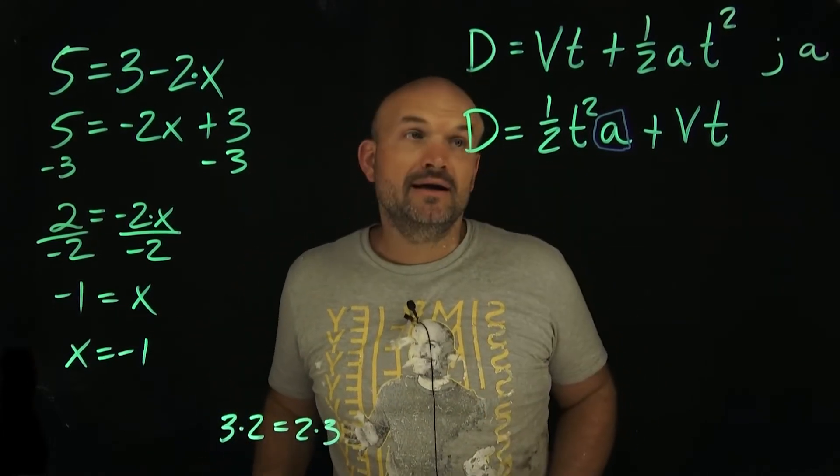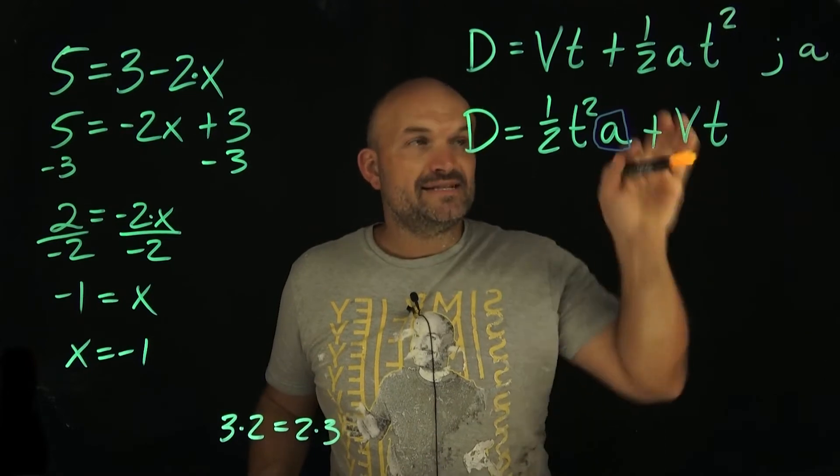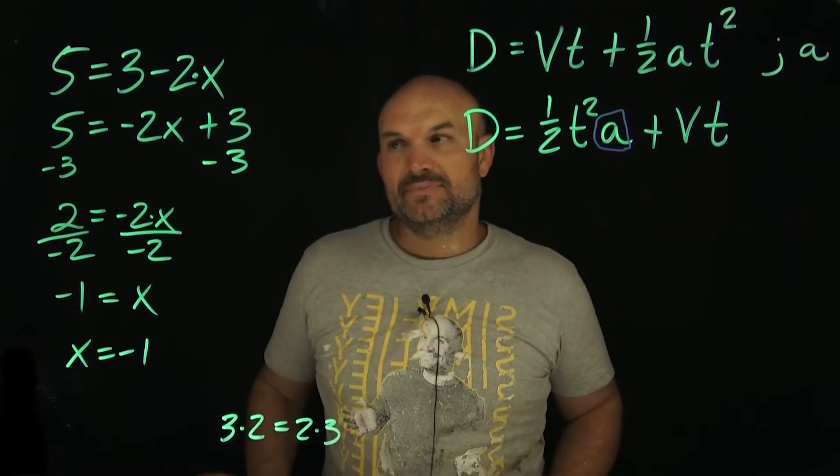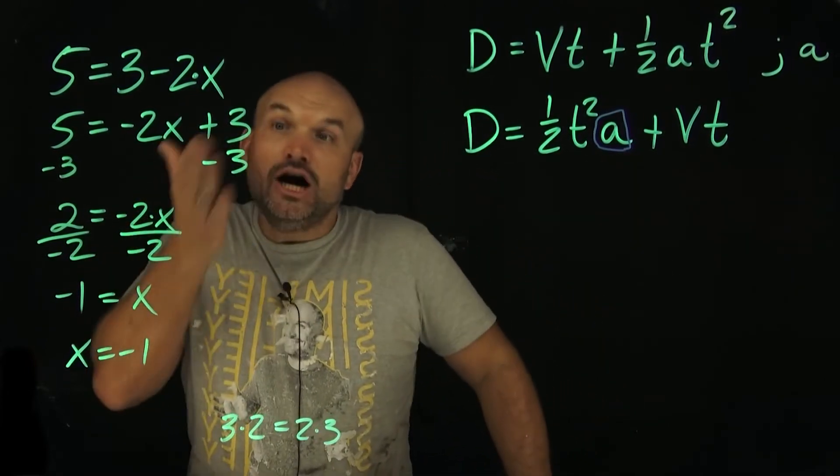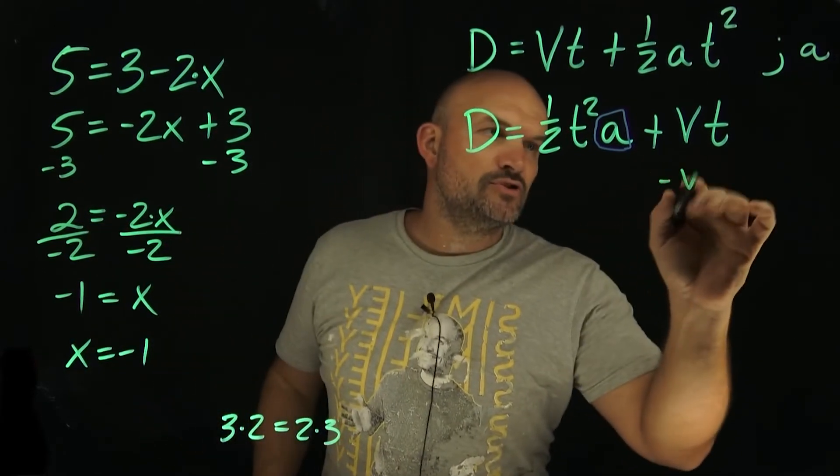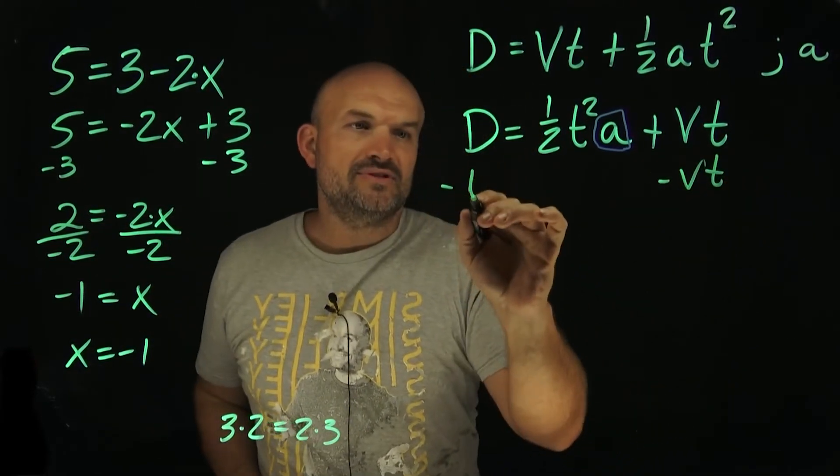What operations are being applied to our a? Well, it's being multiplied by 1 half t squared, and it's being added to by vt. So just like we did over here, we undo addition and subtraction first. So therefore, I'm going to subtract a vt on both sides.